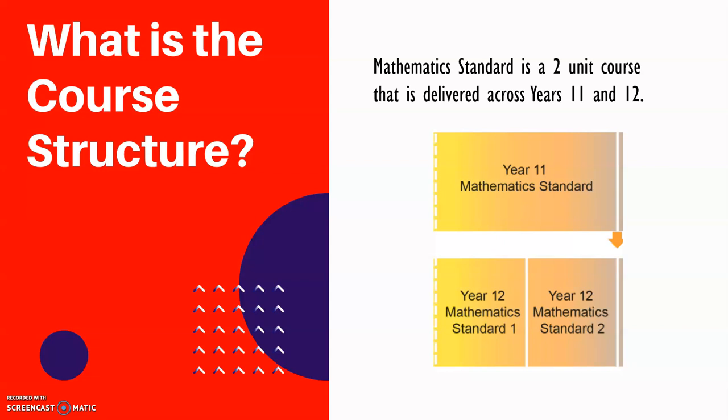There are two pathways to complete the 120-hour course across Year 12: Mathematics Standard 2, which is Category A, or Mathematics Standard 1, which is Category B and offers an optional HSC examination.